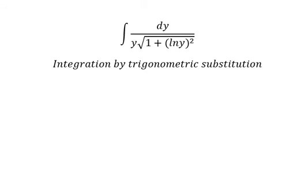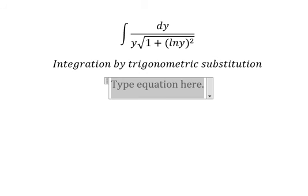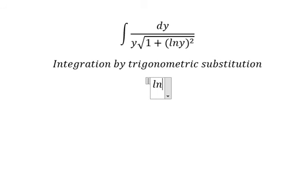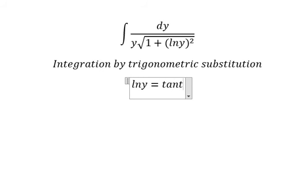I will put ln y equals to tan t. Because if we apply this condition, 1 plus tan squared t will change into secant squared t.